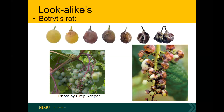Two pathogens that can look similar are botrytis — shown at the top — where the fruit gets a darkened and shriveled appearance similar to black rot, and also anthracnose, which will cause the fruit to turn darker in color. However, I can tell the difference between botrytis and black rot right away because botrytis produces spores that make the fruit look fuzzy. Black rot does not produce a fuzzy appearance. Anthracnose has a reddish coloration that you will not see with black rot.